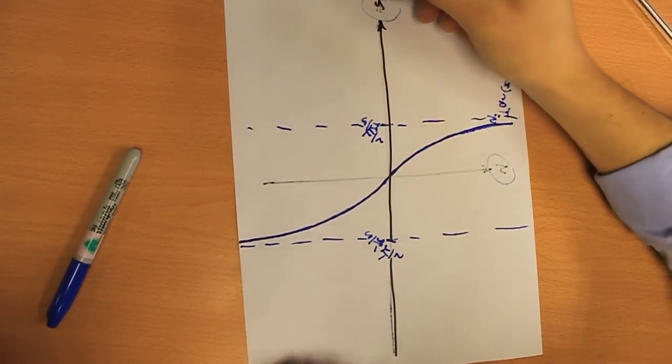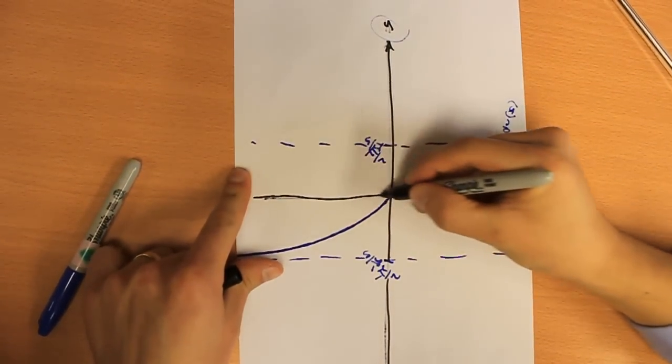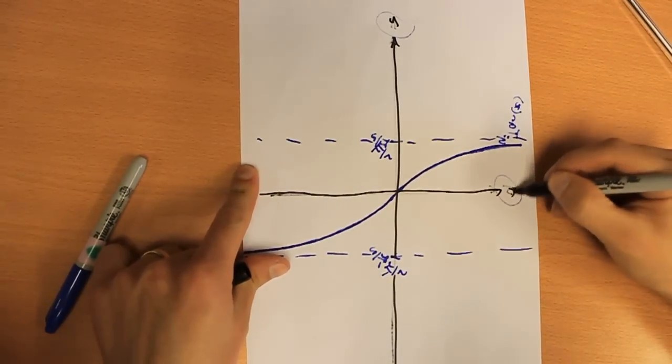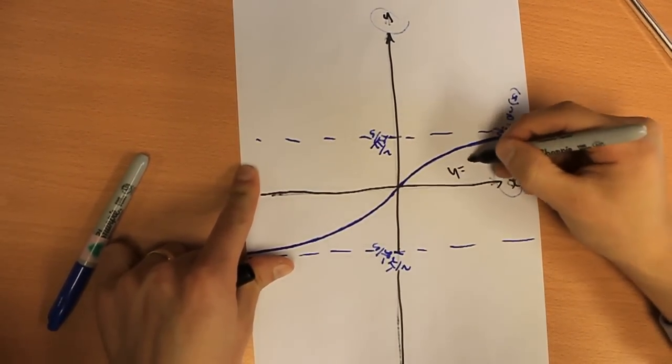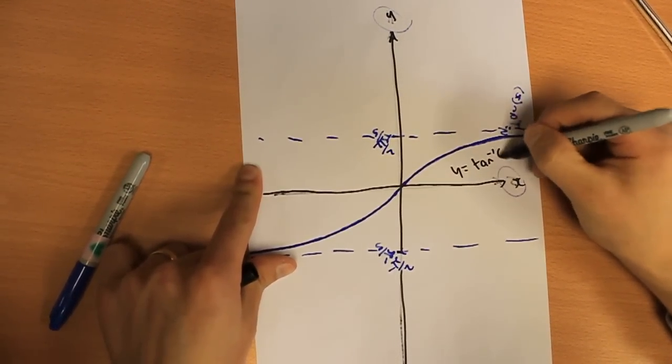And tan goes on forever in the positive and negative x direction, which is bounded above by pi over 2 in the y direction and below by minus pi over 2. And this graph is y equals tan to minus 1 of x.